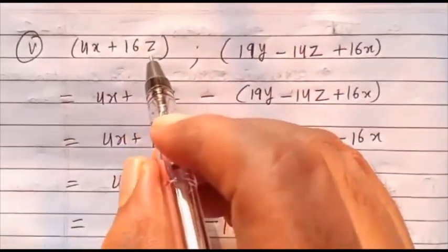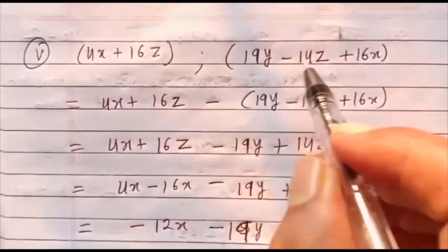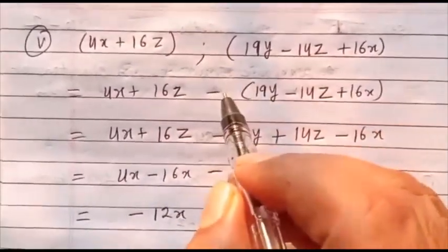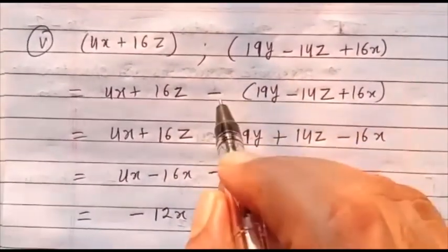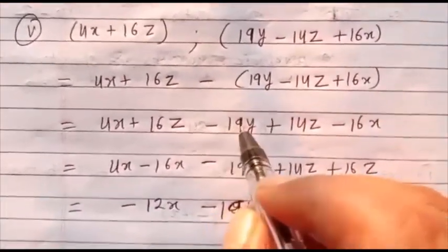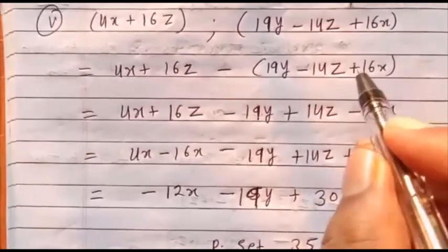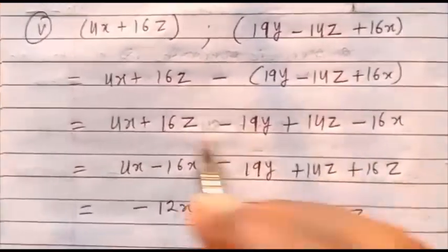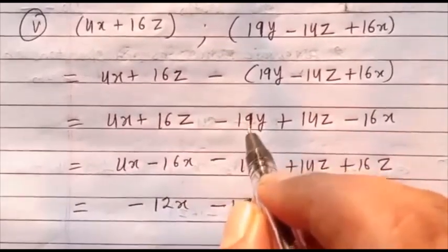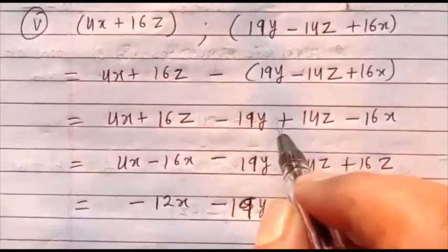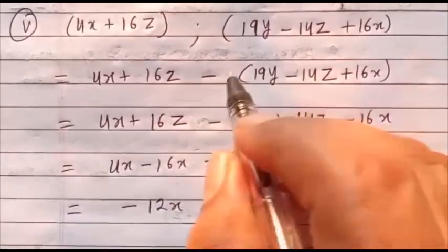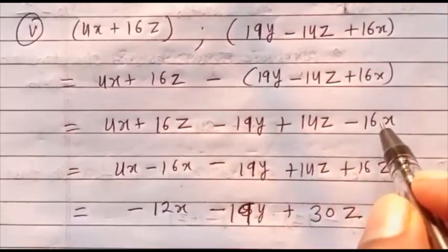Next: (4x plus 16z) minus (19y minus 14z plus 16x). Before the bracket write the minus sign, then take the minus sign inside the bracket — plus becomes minus, minus becomes plus, plus becomes minus. So we get: 4x plus 16z minus 19y plus 14z minus 16x.